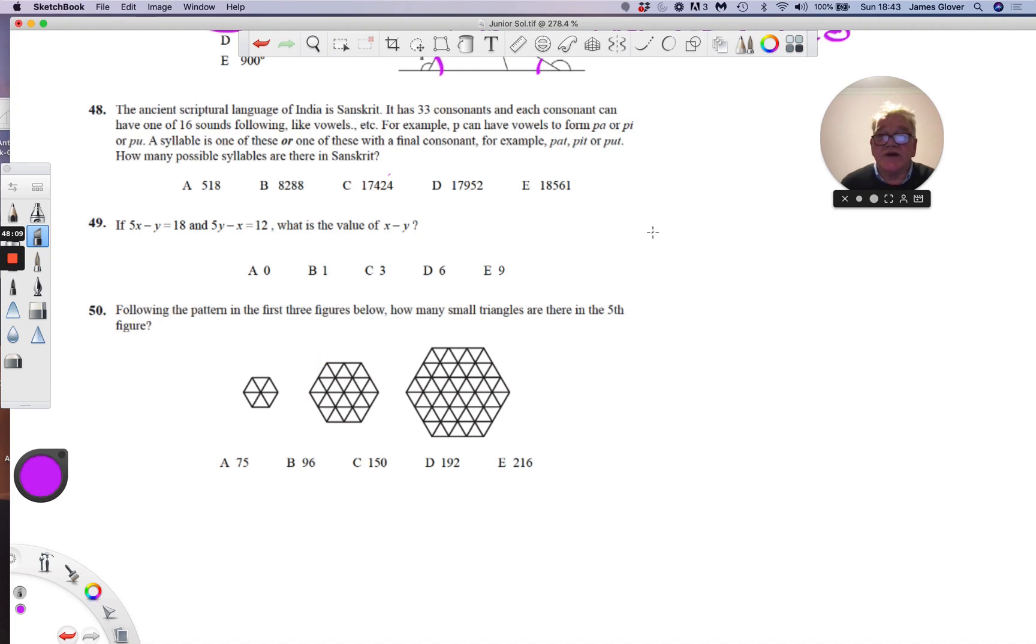So if we start with the 33 times 16, and use vertically and crosswise. Three sixes are 18. Three sixes are 18, add three is 21, add one is 22. Once three is three, add two is five. So there are 528 syllables consisting of a consonant followed by a vowel.